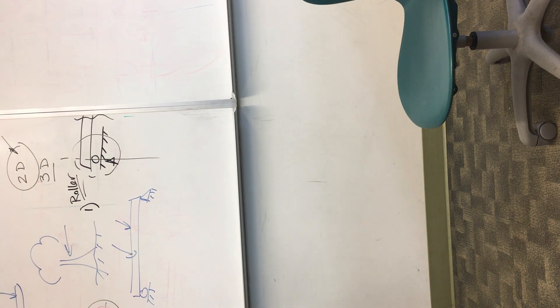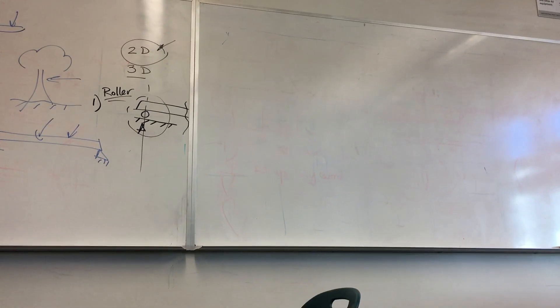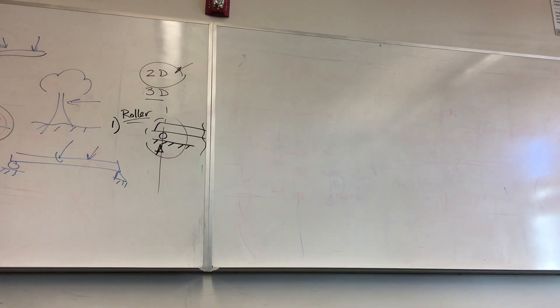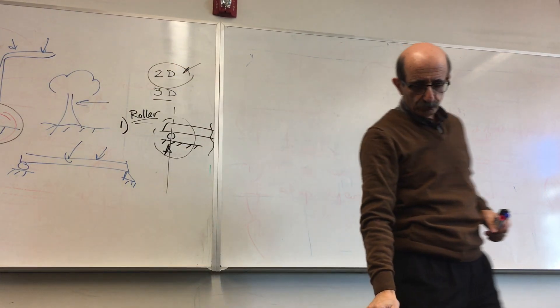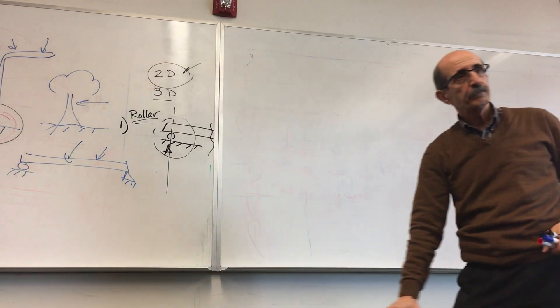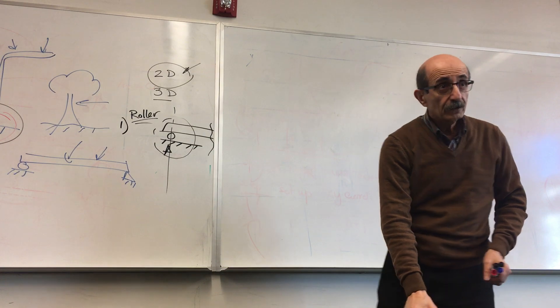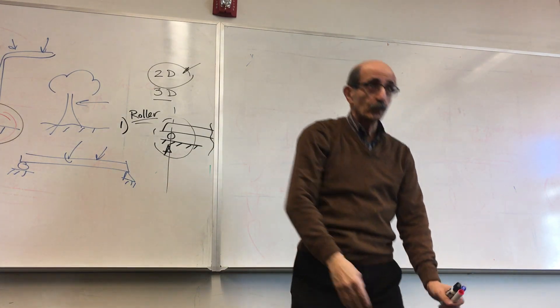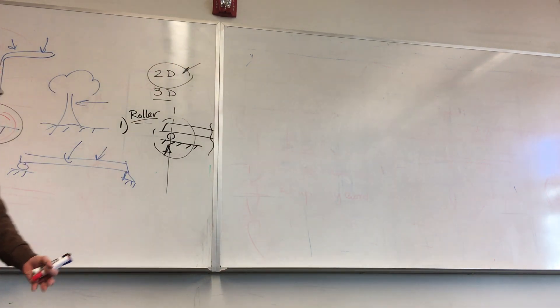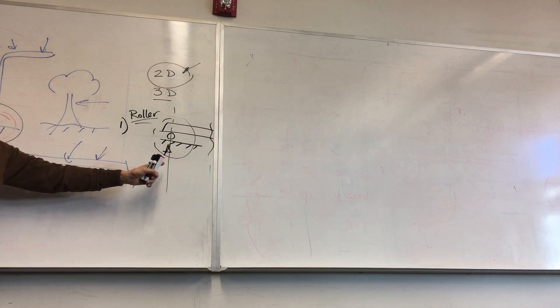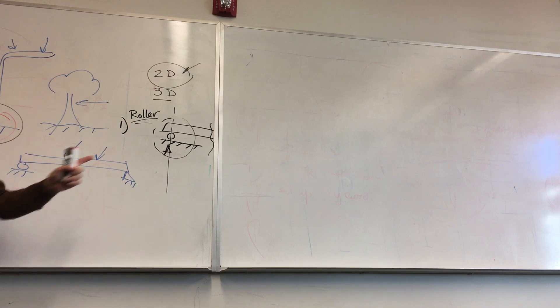A roller doesn't necessarily mean it has wheels — it is a mechanism that can prevent motion only in one direction. The cable supporting that light fixture allows rotation and you can move it laterally, but you cannot pull it down. So that cable is, in a way, a roller. It represents one force. Motion is allowed in one direction and rotationally, but you cannot push it downward, so that support represents one unknown force.